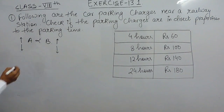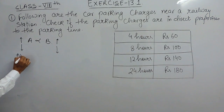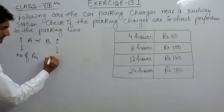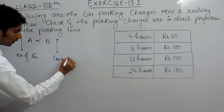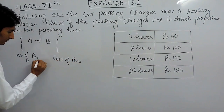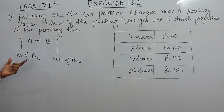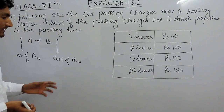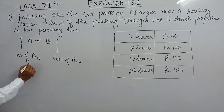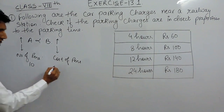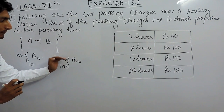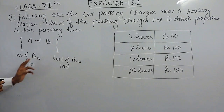For example, if I take two values — the number of pens and the cost of those pens — if I have 10 pens and the cost is 100, then if I increase the number of pens, clearly the cost must also increase. So these two are called direct proportions.